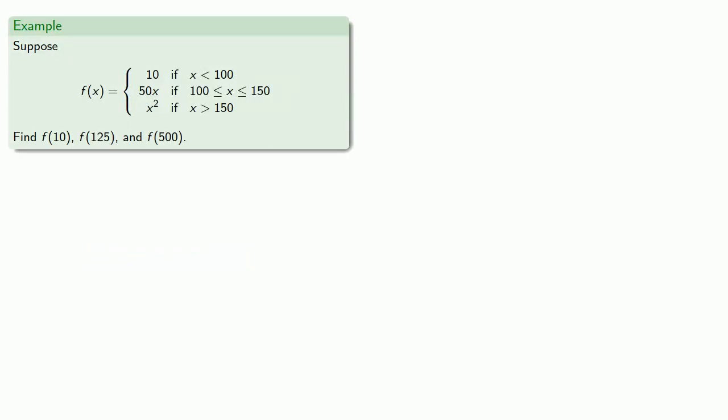Our notation for piecewise functions looks something like this. Here we have our function and it's equal to, in this case, three different formulas depending on the value of x. So if x is less than 100, we use the function 10. If x is between 100 and 150, we use 50x. And if x is greater than 150, we use x squared.